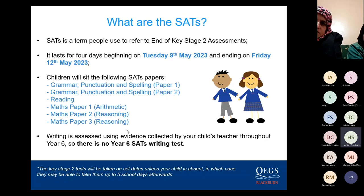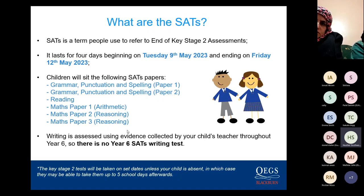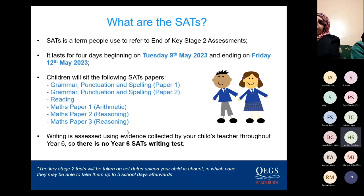This year SATs will run from Tuesday 9th May through to Friday 12th May. During that week, the children are going to be sitting their SPAG paper, which is the spelling, punctuation and grammar — split into two papers — a reading paper, and three maths papers: arithmetic and two reasoning papers. The children are used to seeing the papers; we're looking at them in school and unpicking them, so it won't be anything different on the day, except the papers will be in colour.